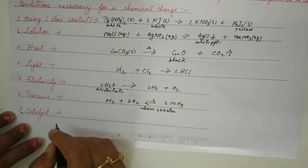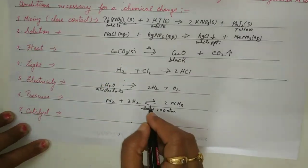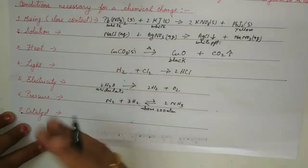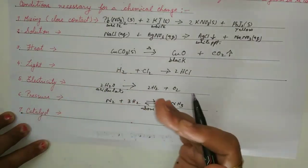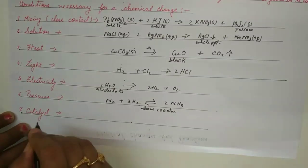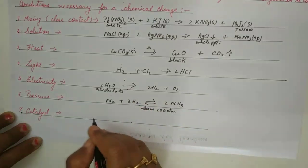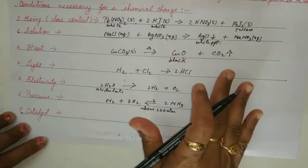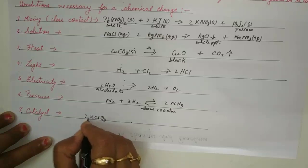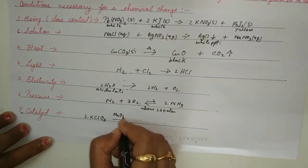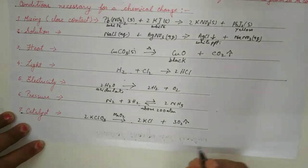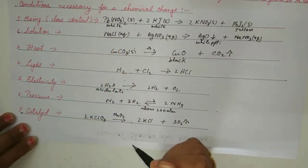The seventh condition is catalyst. In the Haber process, iron is used as a positive catalyst. Catalysts can be of two types: positive, which increases the reaction rate, and negative, which decreases the reaction rate. A catalyst is a compound that helps the reaction take place but does not itself participate in the reaction. For example, potassium chlorate in the presence of MnO2 (which is black) gives potassium chloride and oxygen gas.